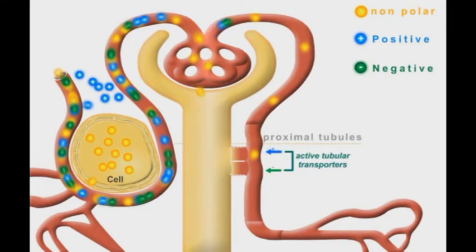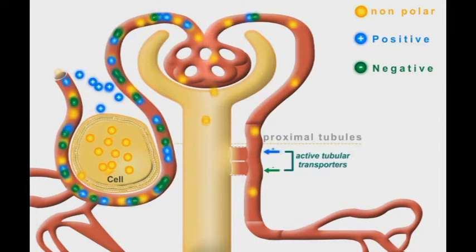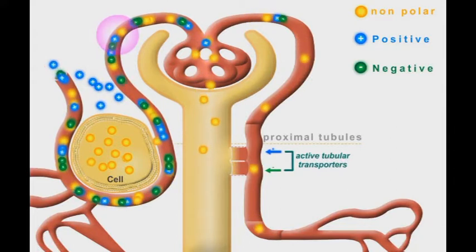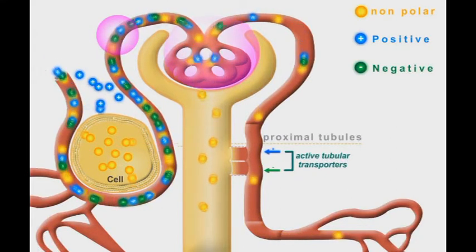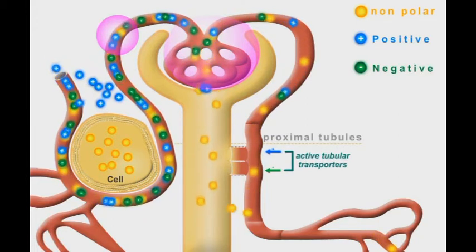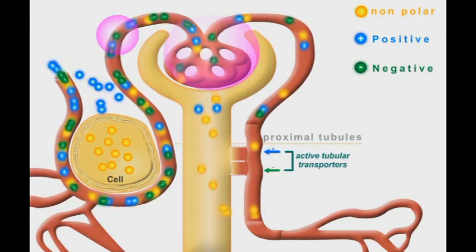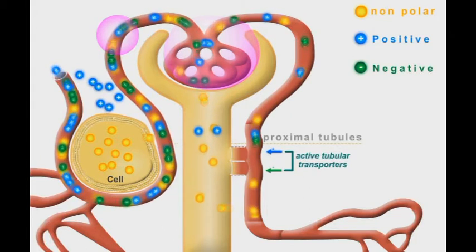The kidney is the main organ of drug elimination. The drugs flow through the afferent arterioles into the Bowman's capsule, where the capillaries plexuses form glomeruli, which facilitate the transportation and filtration of drugs into the nephric tubules.